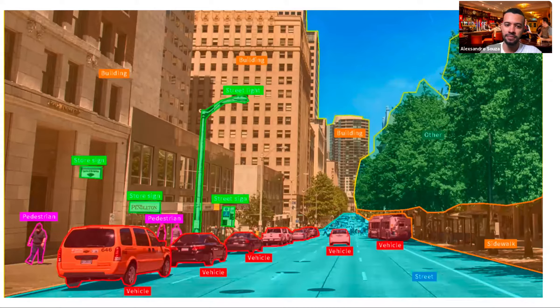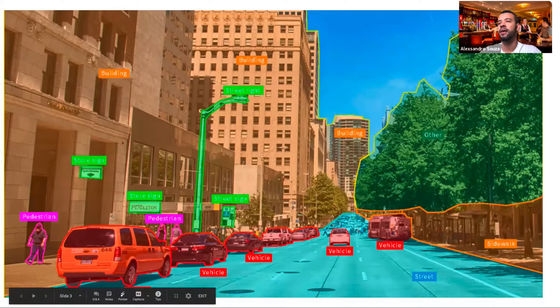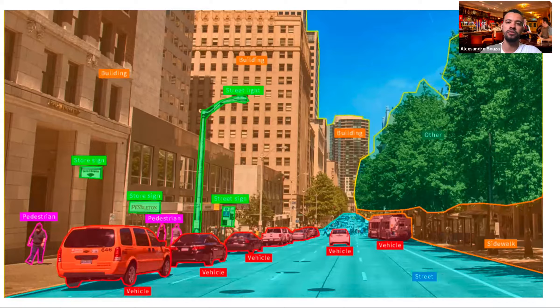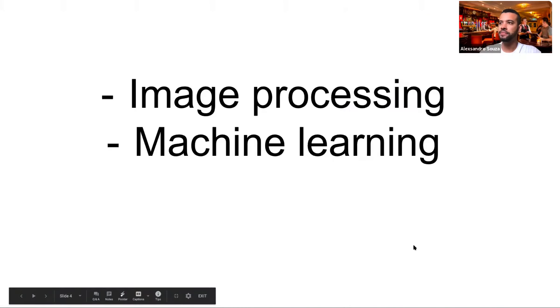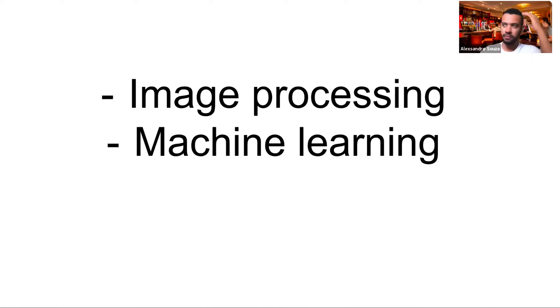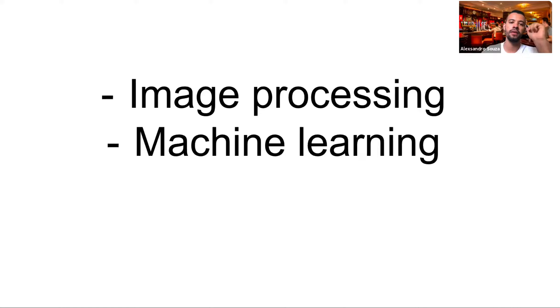Computer vision is basically the way a computer can interpret what's in images and videos — the ability to write programs that learn from images or videos. I'll be demonstrating different projects divided into two types: projects using image processing (like things done in Photoshop), and machine learning projects where we make our models smarter.